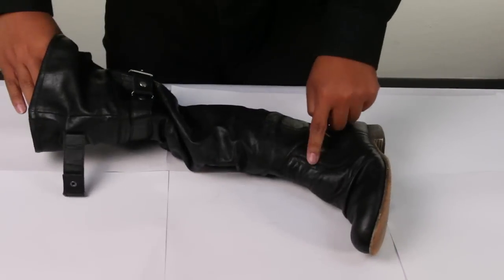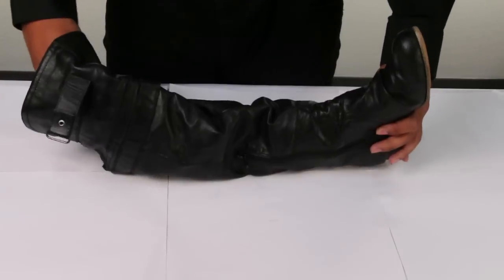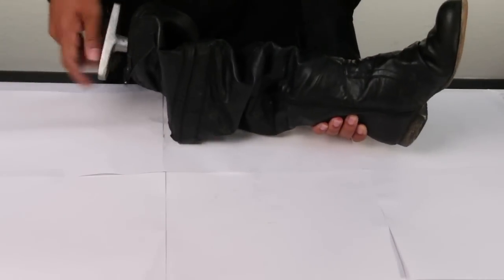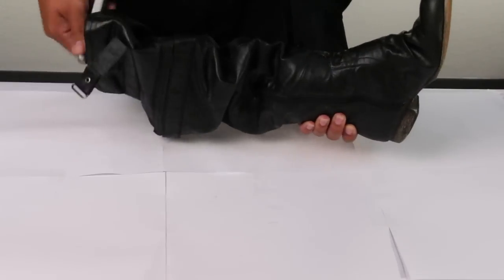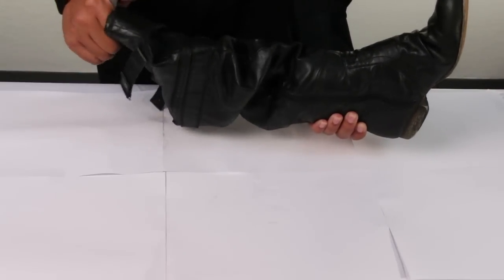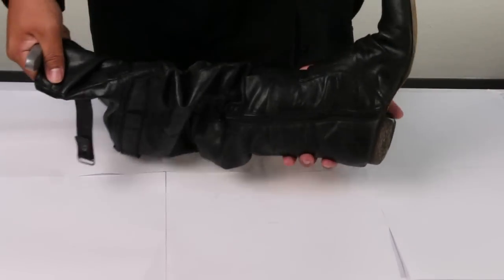This section right here is the area I want to stretch. Now start turning the handle clockwise. This is where you can decide how much you would like to stretch. I just need a little stretching so I'm going to stop turning once I feel a good amount of tension.